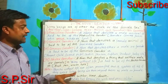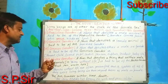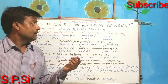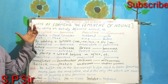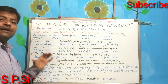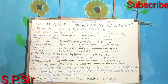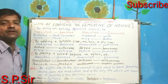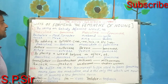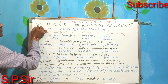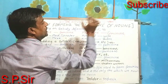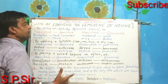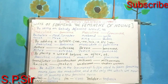So we have seen masculine gender, feminine gender, neutral gender, and common gender. Now I will show you a few points which are very important — how we can form the feminine of nouns, which means how to convert masculine gender to feminine gender.